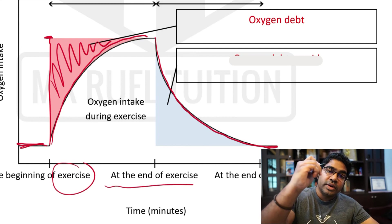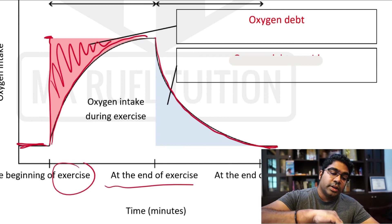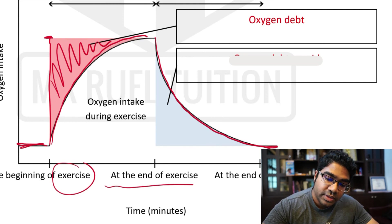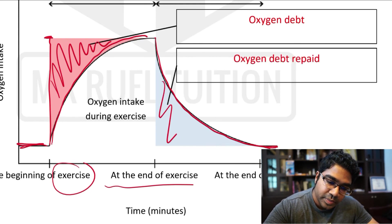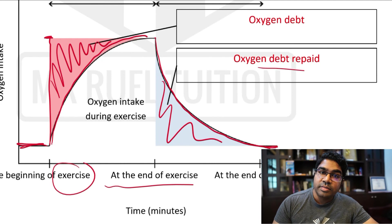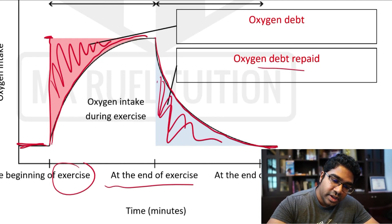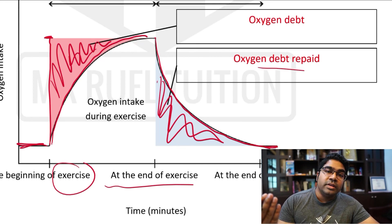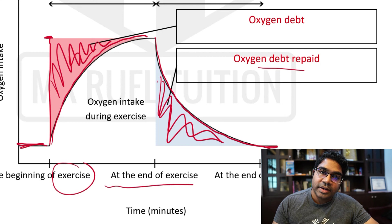It shoots up during exercise and then it gradually goes up, and then it gradually comes down. So this is where we say this region represents the oxygen debt being repaid. And you can see the area in these two regions are the same, representing the same amount of oxygen that is needed and then supplied later on.